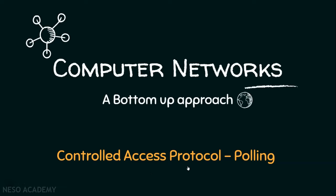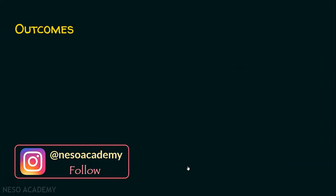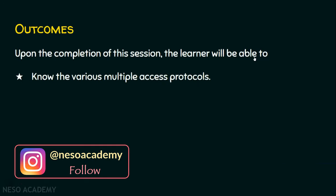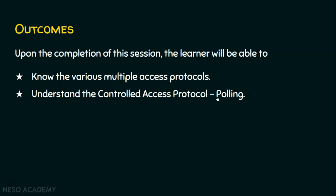As usual, let's start the session with the outcomes. In today's session, we have three outcomes. Upon the completion of this session, the learner will be able to: outcome number one, we will know the various multiple access protocols; outcome number two, we will understand the controlled access protocol, polling; and the last outcome is, we will know the efficiency of polling method.